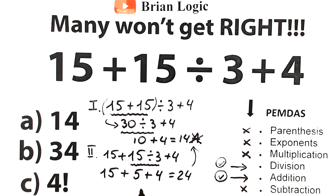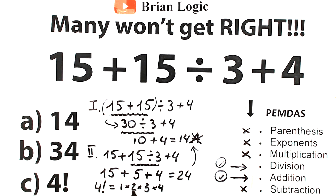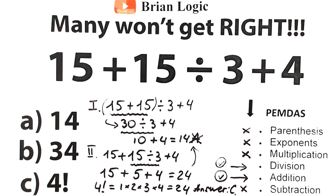The absolutely correct solution is: division first, then addition in strict left-to-right order. Our answer is 24. Looking at option C, we have 4 factorial, which gives us 1 times 2 times 3 times 4, which equals 24. So 4 factorial is the same as 24 — therefore the correct answer to this challenge is option C.